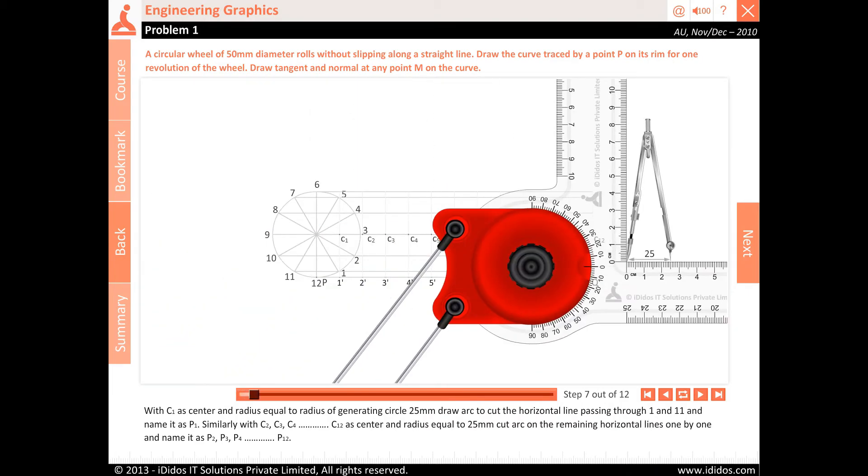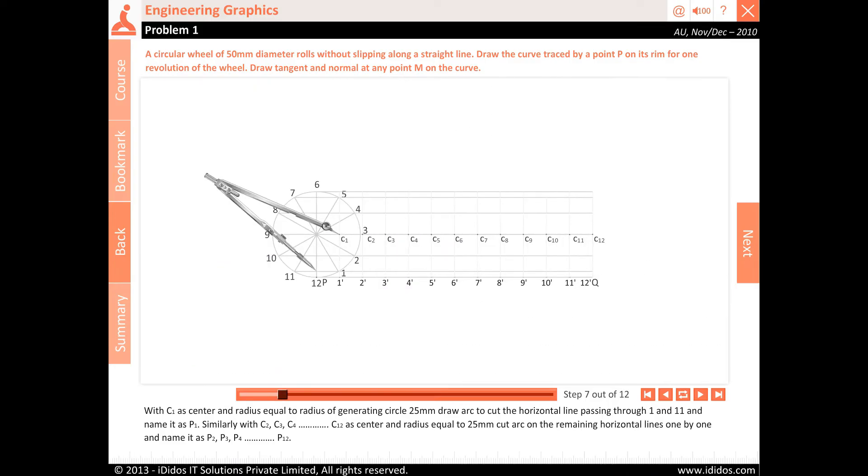With C1 as center and radius equal to the radius of the generating circle (25 mm), draw an arc to cut the horizontal line passing through 1 and 1′, and name it as P1. Similarly, with C2, C3, C4, C5, C6, C7, C8, C9, C10, C11, and C12 as centers and radius equal to 25 mm, cut arcs on the remaining horizontal lines.